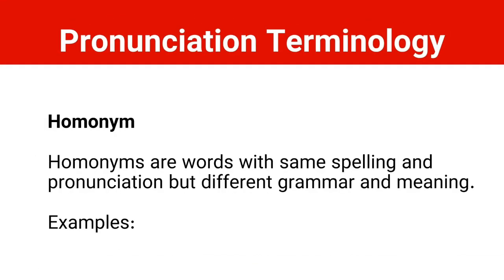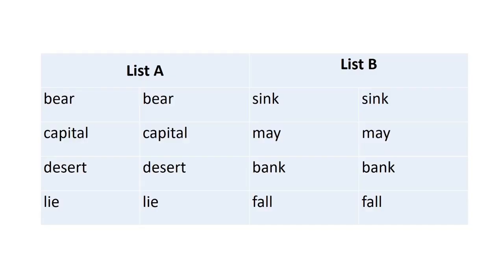The last term for today is homonym. Homonyms are words with the same spelling and the same pronunciation — their spelling is the same, their pronunciation is the same — but they have different grammar and meaning. For example, 'bear' and 'bear': their spelling and sounds are the same, but their meanings are different. 'Bear' is an animal; 'bear' as a verb means to tolerate.